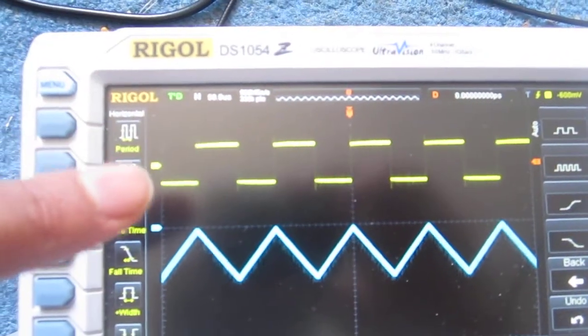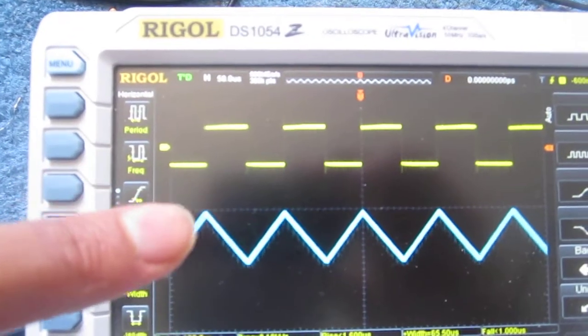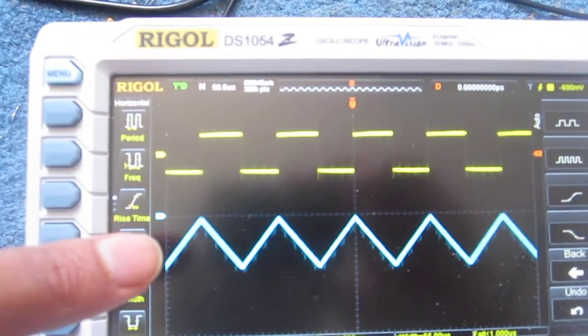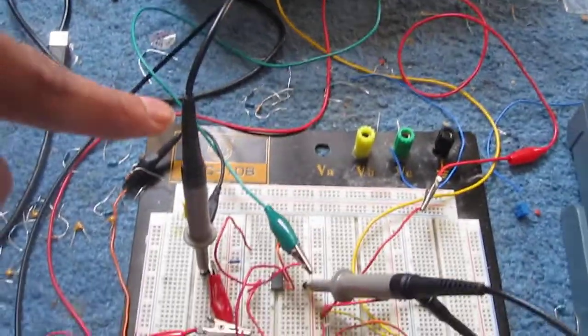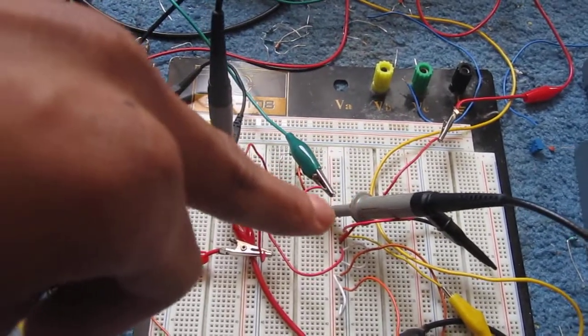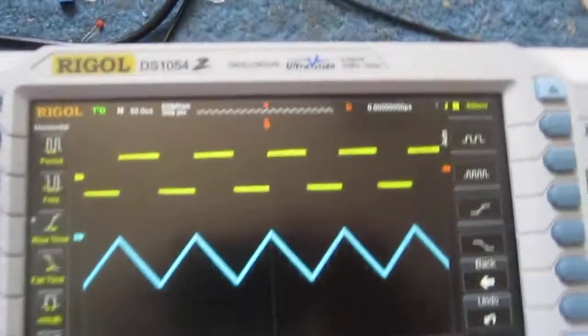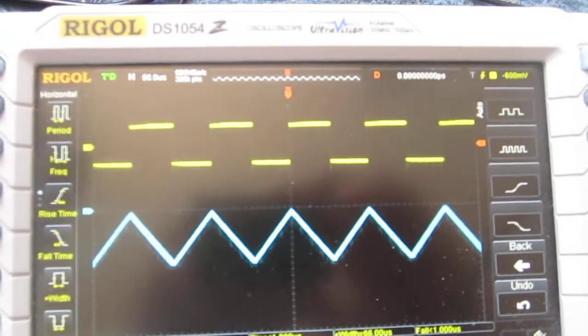So if you feed a square wave into an integrator circuit, you should get a triangle waveform as the output. So this right here is the oscilloscope probe to the input and this is the oscilloscope probe to the output, and this is what you see on the oscilloscope.